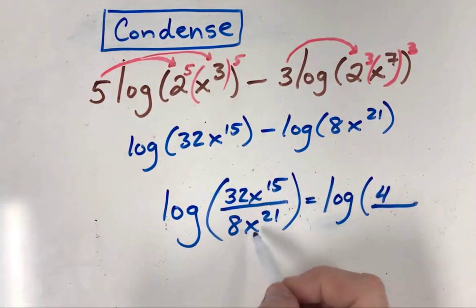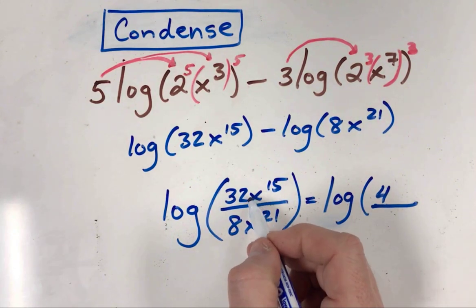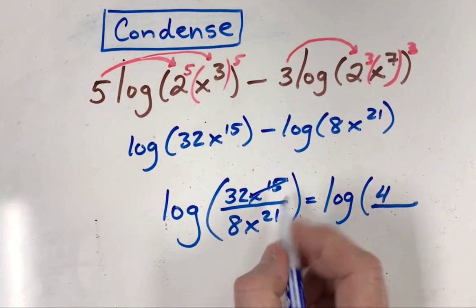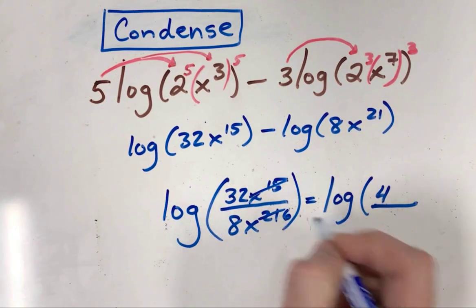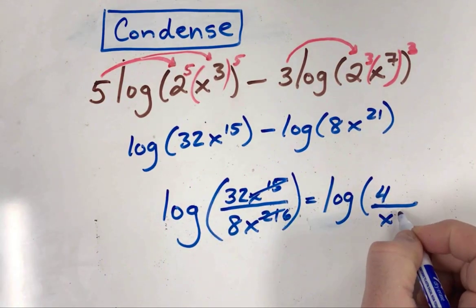If I have fifteen x's on top and twenty-one x's on the bottom, cancel out fifteen common x's. If I cross fifteen off the top and fifteen off the bottom, six remain on the bottom, so you'll have x to the sixth on the bottom.